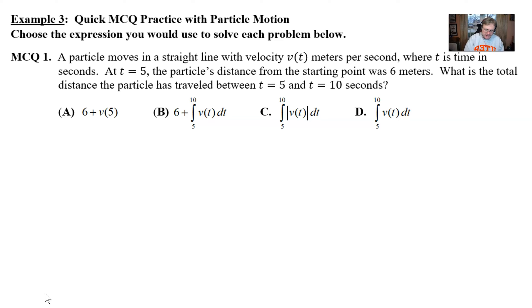So choose the expression you would use to solve each problem. A particle moves in a straight line with velocity v of t meters per second where t is time in seconds. At t equal 5, the particle's distance from the starting point was 6 meters. What is the total distance the particle has traveled between time 5 and 10 seconds?